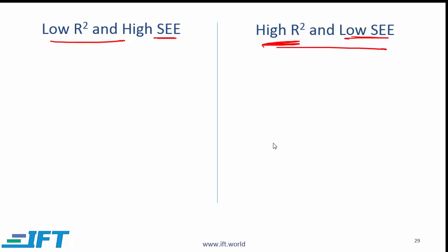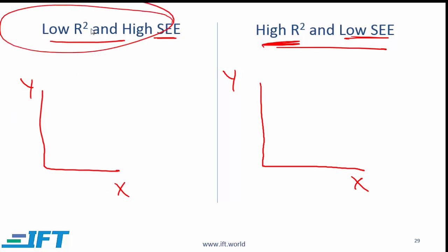Now what I want you to do before I do this is in your notebooks just with x and y and x and y just draw out a scatter plot that reflects this situation. So here is what you should be coming up with. A low R squared and a high SEE is a bad thing.